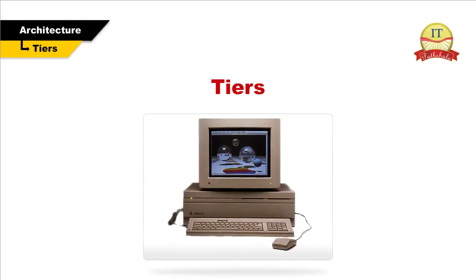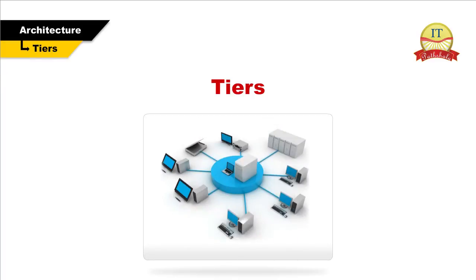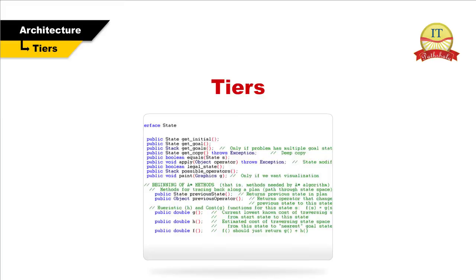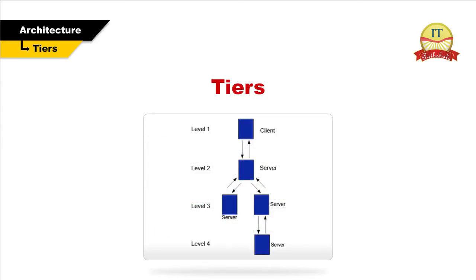Tiers: In the beginning, computers were separate, individual devices. Programs had access to all the computer's input and output through computer-connected devices. With the invention of networks, things became complicated. Now, we have to write programs that depend on other programs running on remote computers. Often, we have to write all those faraway programs as well. This is what is called tiered or distributed programming.